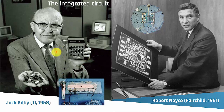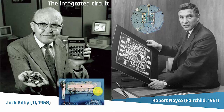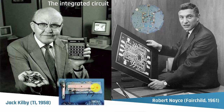Jack Kilby was a young engineer at TI. While most of the company was on vacation and he didn't have enough vacation days, he sat in his lab and played around. He created a piece of germanium with a bunch of different things on it — the first time they were able to put a number of transistors on one silicon substrate. There were things missing: how to isolate between different devices — he cut deep trenches with a knife — and how to connect between them, which he did with an external piece of metal.